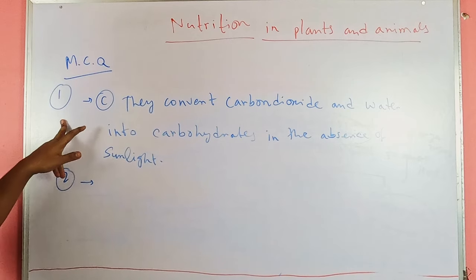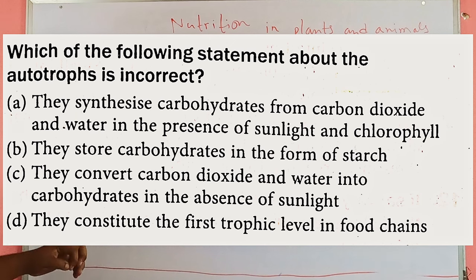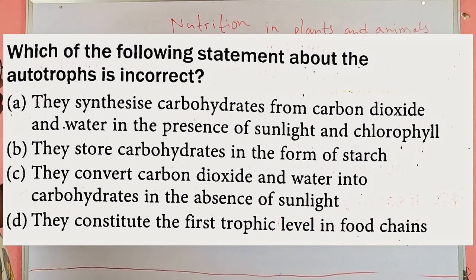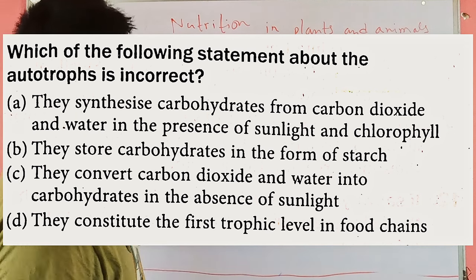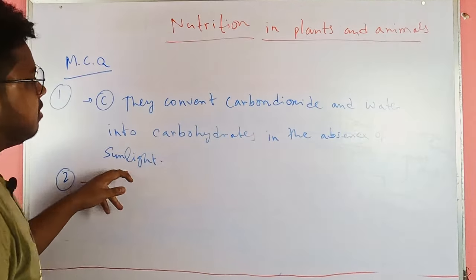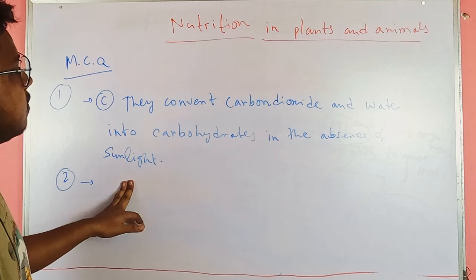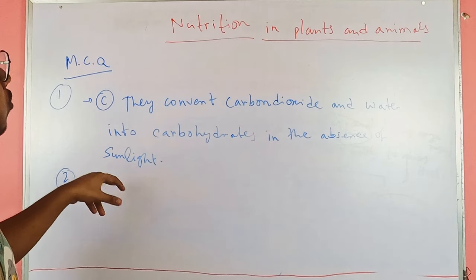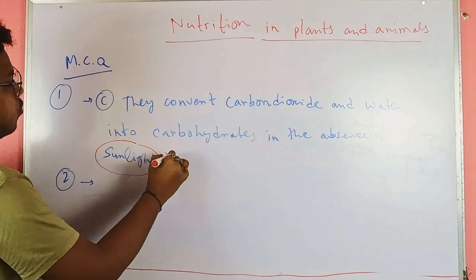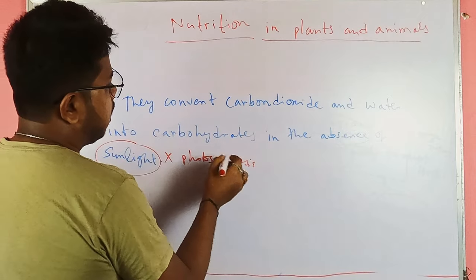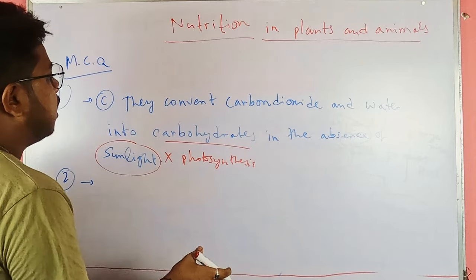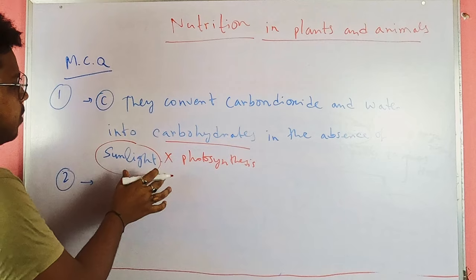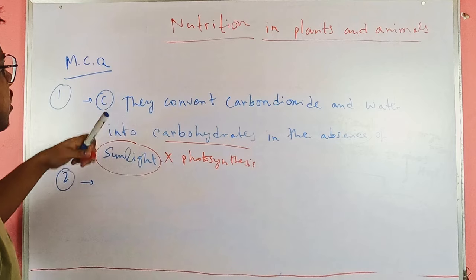Now we will discuss questions on nutrition in plants and animals. The first question asks for the incorrect statement among four given options. Option C is incorrect — it states that plants convert carbon dioxide and water into carbohydrates in the absence of sunlight. Since sunlight is the most important criteria for photosynthesis, without sunlight no photosynthesis occurs and no carbohydrates are produced.